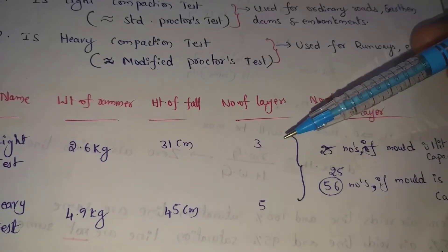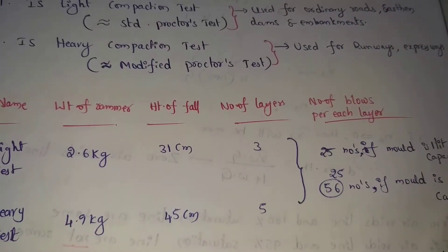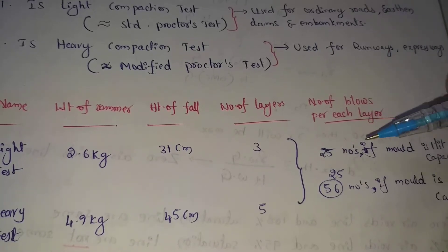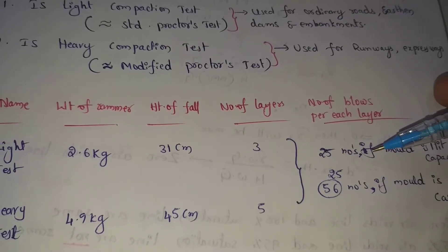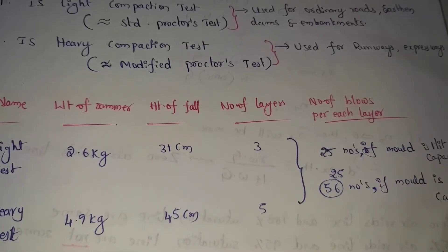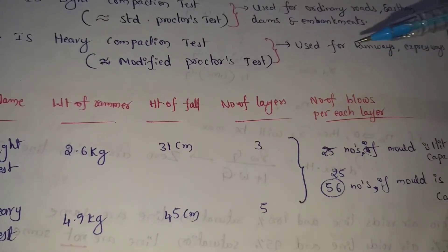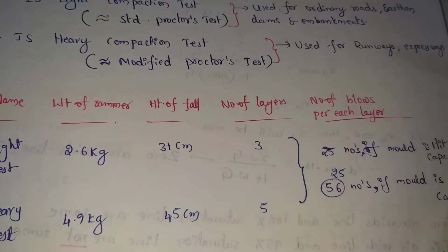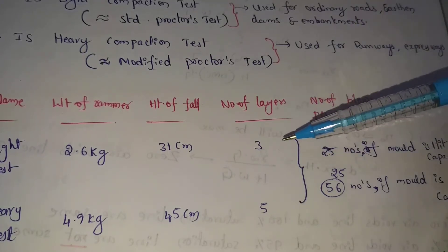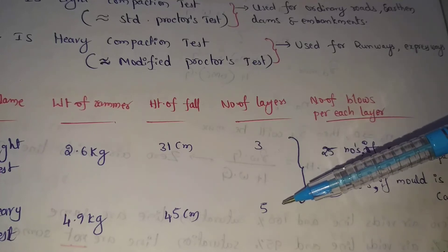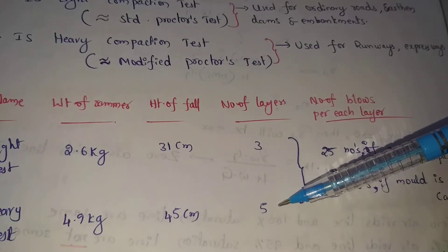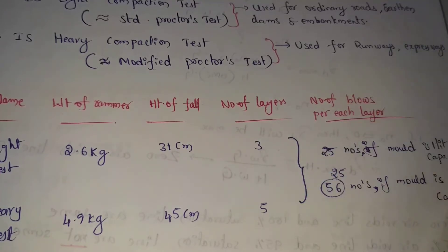For each layer, 25 number of blows are applied. For the light compaction test, 25 blows per layer over 3 layers. For the heavy compaction test, 25 blows per layer over 5 layers.